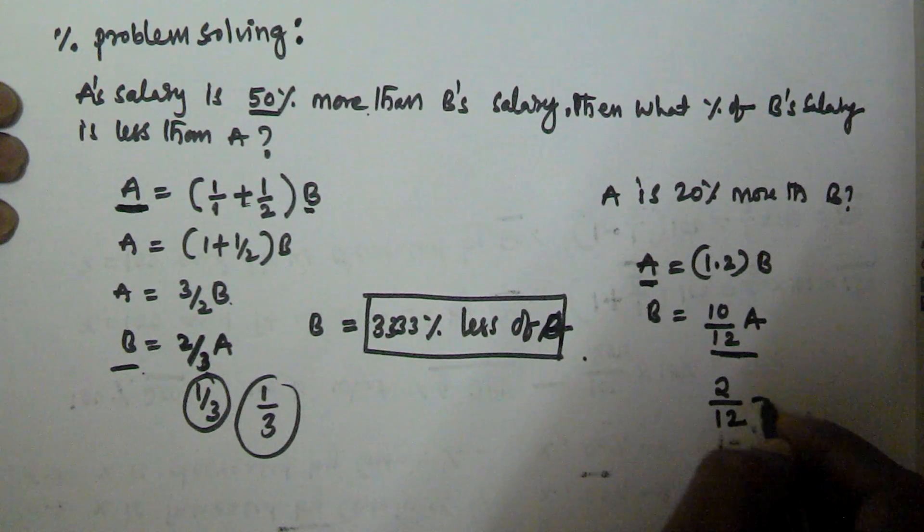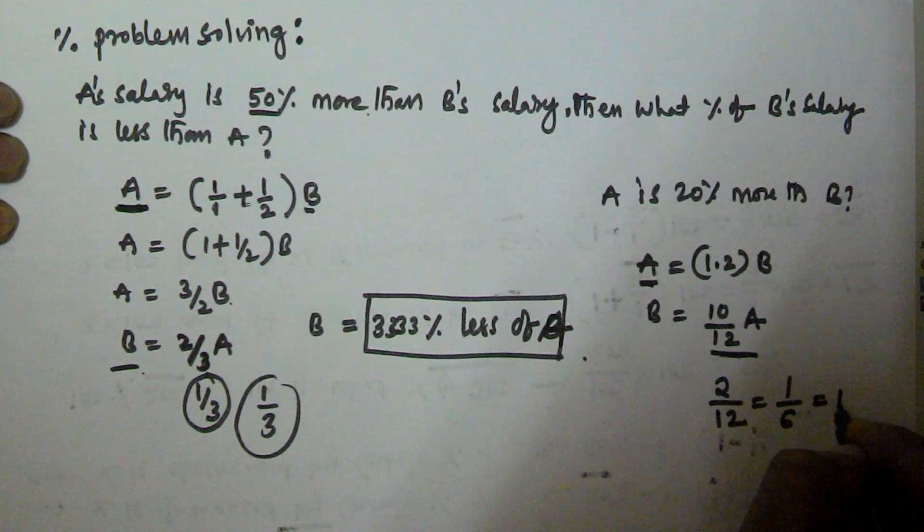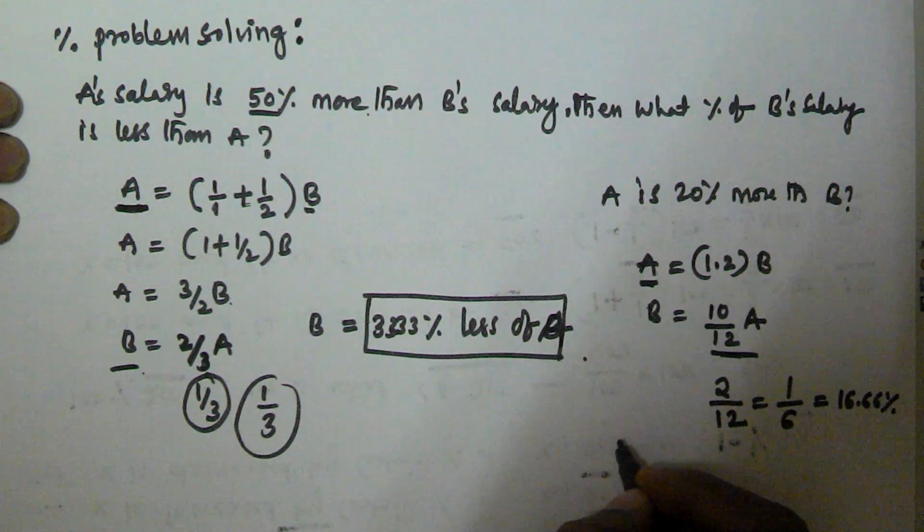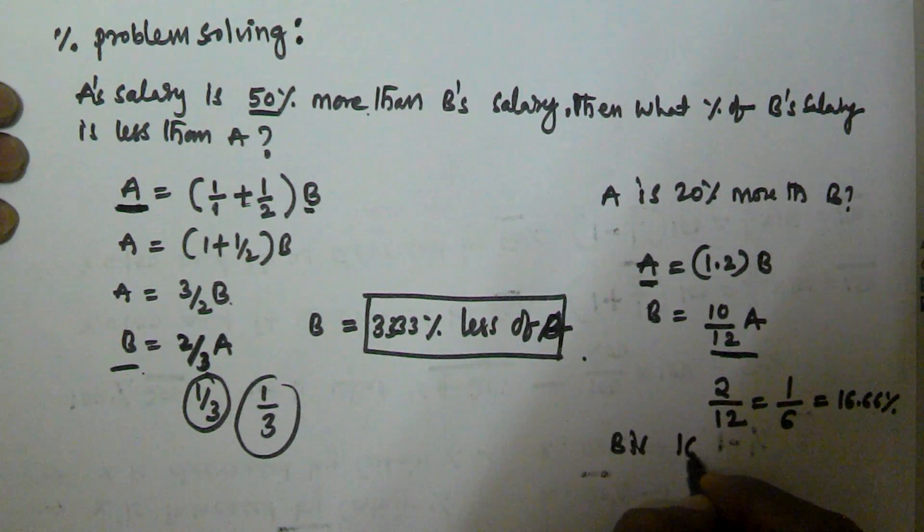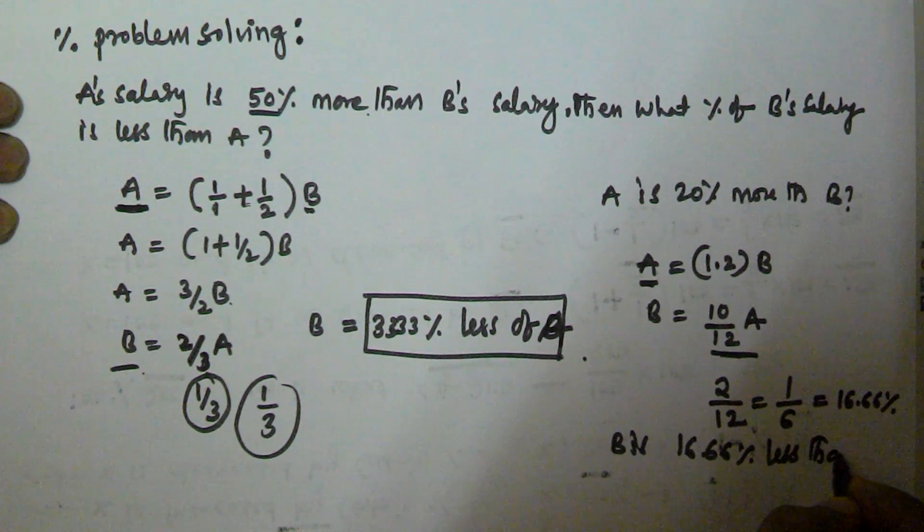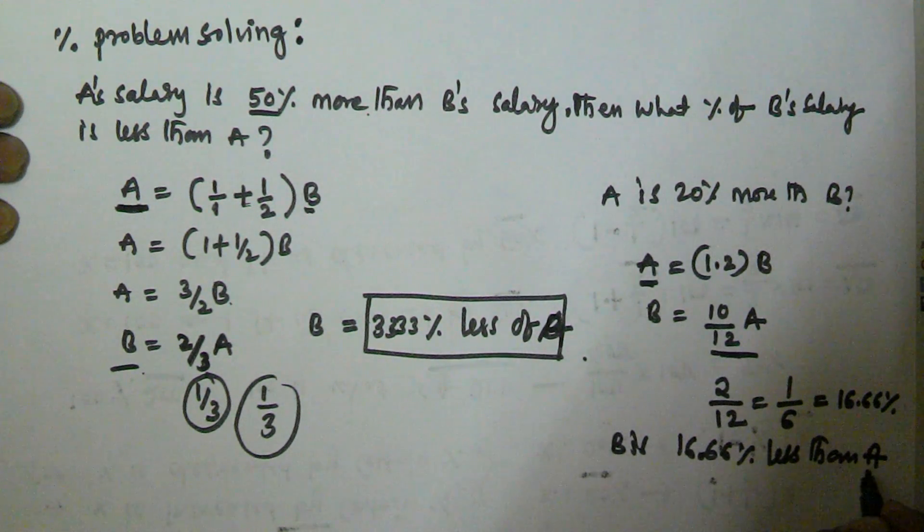Equal to 1 by 6. 1 by 6 is equal to 16.66%. That means B is 16.66% less than A. So B's salary is 16.66% less than A. I hope you understand this problem.